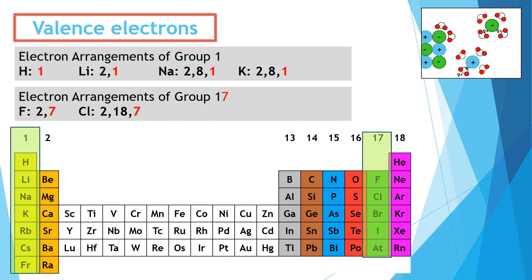This is a really quick way to work out how many valence electrons an atom has — just look up which column it's in on the periodic table and take the last digit of the group number: one, two, three, four, five, six, seven, eight.